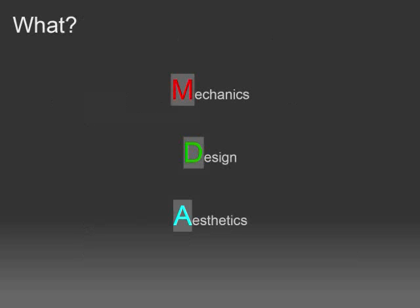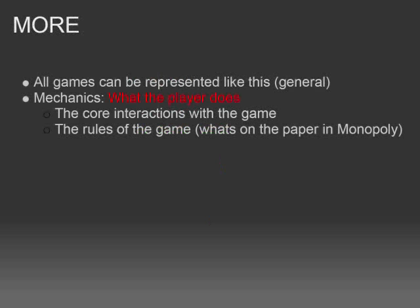The benefits outweigh any possible complaints, I think. So MDA is the system I'm going to talk about today. M is for Mechanics, D is for Dynamics, and A is for Aesthetics. This system is really general — all games can actually be represented using it, or at least all games we know about. The three parts are: mechanics, dynamics, and aesthetics.